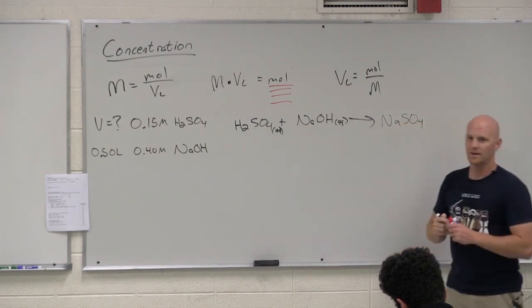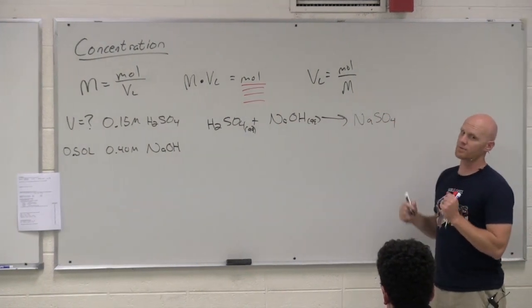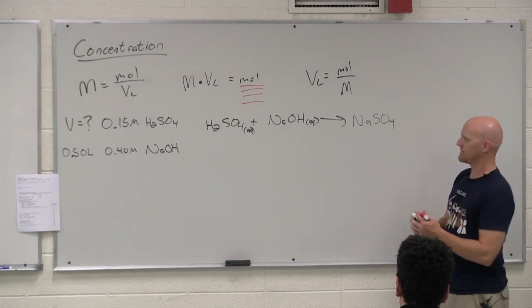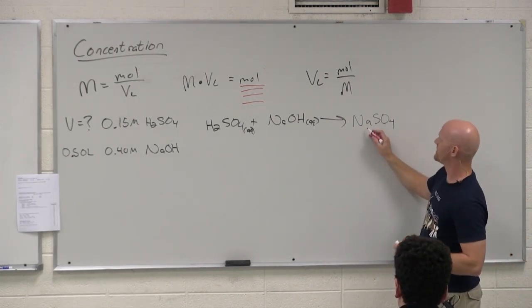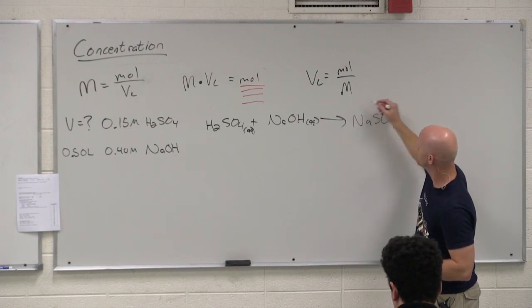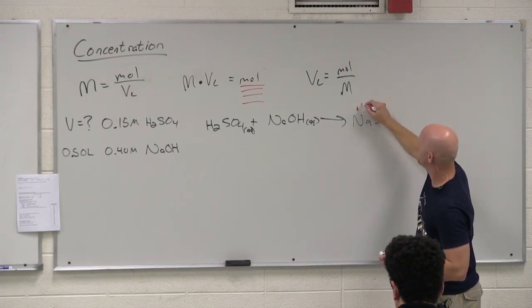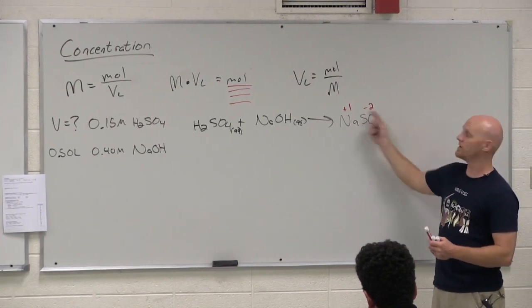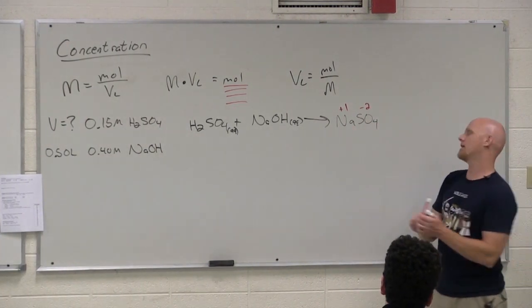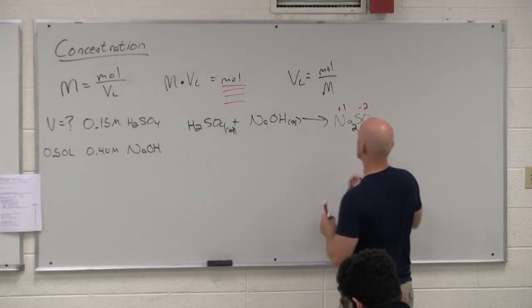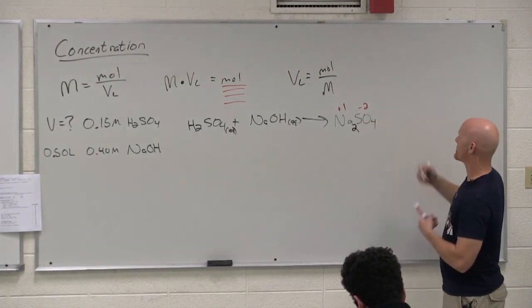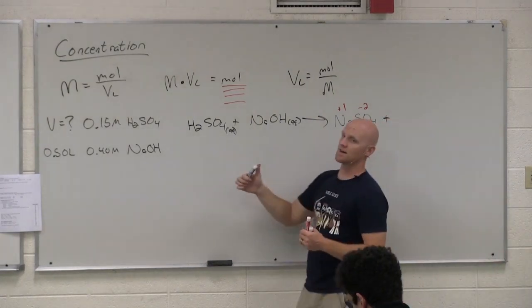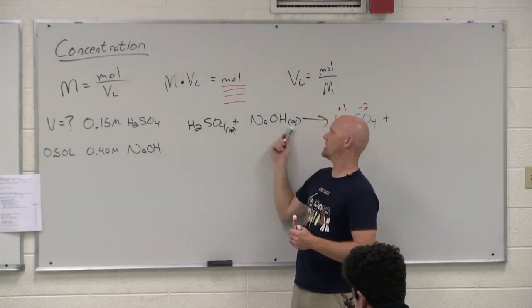When you do an acid-base neutralization, what are typically you're going to form as products? Water and some sort of ionic compound or a salt, we might say. Okay. And so first thing we should do is let's get a balanced equation here. So in this case, we're going to do a double displacement reaction. What are my products? H2O and Na2SO4. So let's do the Na2SO4 first. Now, it's not NaSO4, though. Na and SO4 do end up together. But what should be the proper ratio of Na to SO4 based on their charges?